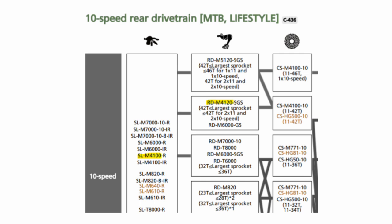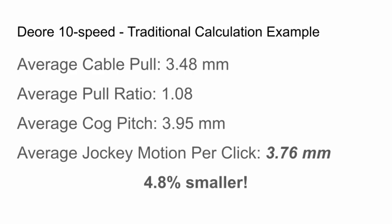Conveniently, I also have an SL-M4100 shifter that Shimano says is compatible with the same derailleur. I can redo this calculation for this 10-speed shifter and see if we get a different result. The shifter has an average cable pull of 3.48 mm and the cassette has an average cog pitch of 3.95 mm. The derailleur is the same as before. However, the jockey only moves 3.76 mm per click — 4.8% smaller than we would expect.